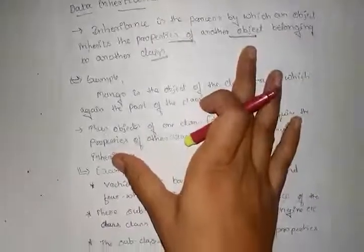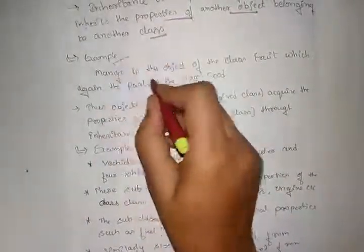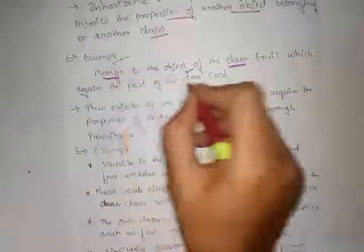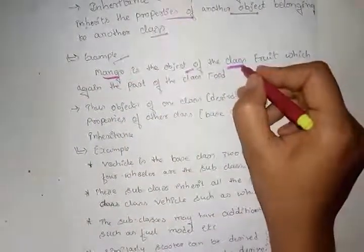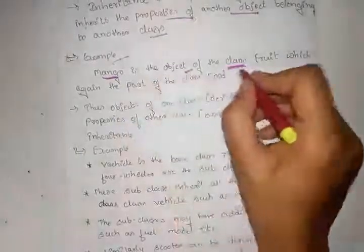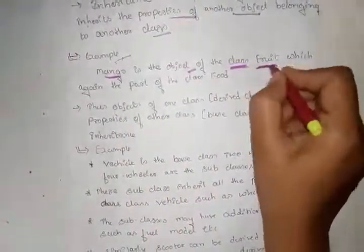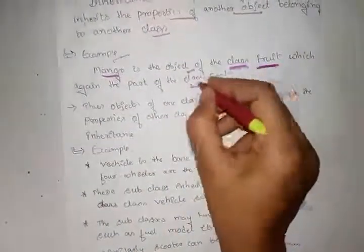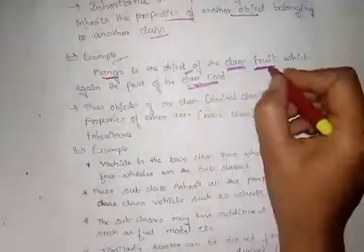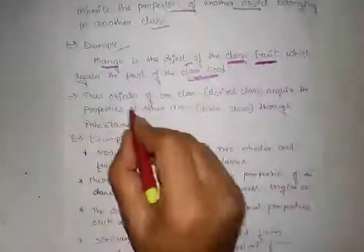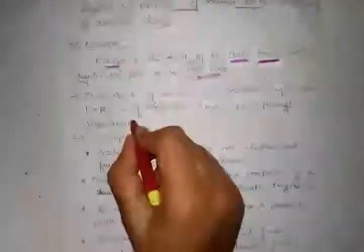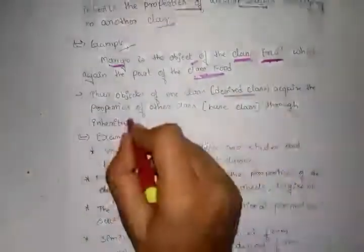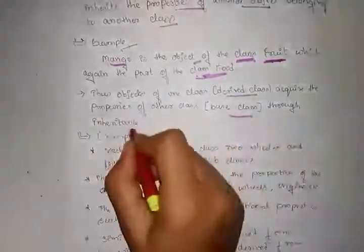For example, mango is an object of the class fruit, which is again part of the class food. Thus, objects of one class — the derived class — acquire the properties of another class, the base class, through inheritance. Class food and class fruit both include mango, meaning one class can access the properties of another class through inheritance.